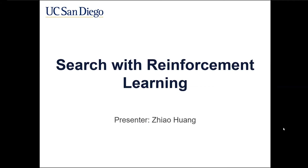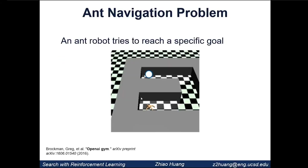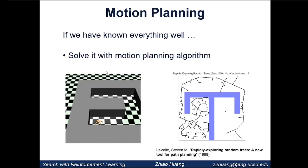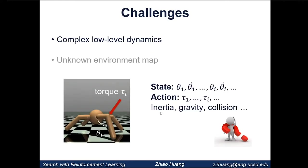I will continue to introduce our work on combining search and reinforcement learning methods to solve long-horizon interaction tasks, called Search with Reinforcement Learning. Consider a simple scenario: the ant navigation problem, where an ant robot is placed in a U-shaped maze and wants to reach the goal on the other side. If we know the dynamics, object locations, and how to move the ant, we could solve this with motion planning algorithms like the Rapidly-exploring Random Tree, which finds a collision-free path. However, two reasons prevent us from directly applying motion planning here.